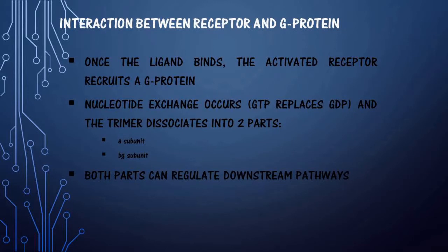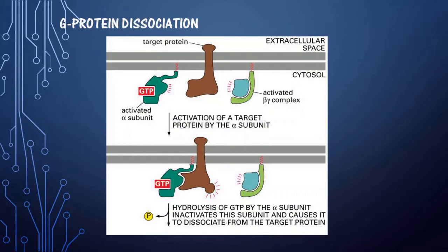Once the ligand binds, the activated receptor recruits a G protein. Nucleotide exchange occurs — GTP replaces GDP — and the trimer dissociates into two parts: the alpha subunit and the beta-gamma subunit. Both parts can regulate downstream pathways. You can see the activated alpha subunit with GTP binding to the target protein. This binding causes hydrolysis of GTP by the alpha subunit, inactivating it and causing it to dissociate from the target protein.